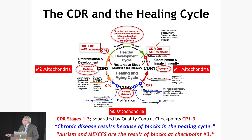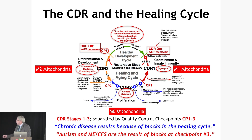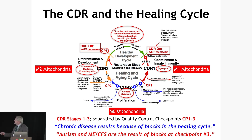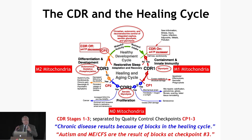A lot of chronic blocks that we're interested in for neurodevelopmental disorders occur close to the end, near what we call checkpoint three. We do a lot of work in autism and chronic fatigue syndrome, and we're very interested in seeing what we can do to allow cells to pass this checkpoint. But these different metabolic stages don't happen by themselves — they require mitochondrial structural and functional change.